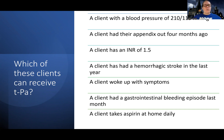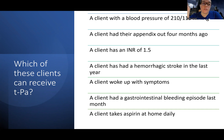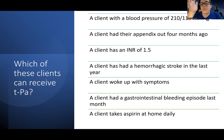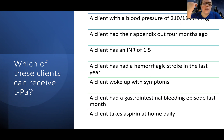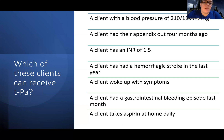There are other contraindications to receiving TPA. Let's look at some practice scenarios. A client with a blood pressure of 210 over 115 — their blood pressure cannot be above 185 over 110, so they cannot receive TPA at this time. However, we can treat their blood pressure and then give the medication. There are absolute contraindications and relative ones — this is a relative one where we can alter the situation.